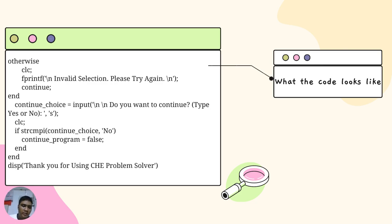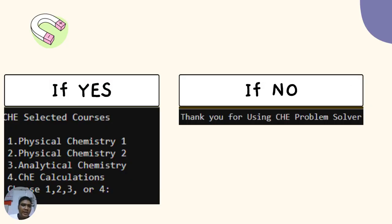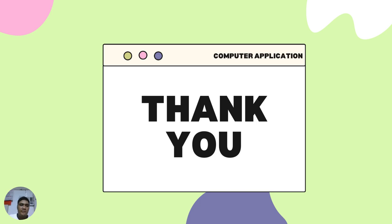Finally, this part of the code is responsible for looping the program. Whenever we solve one problem, the program will ask if you want to continue or not. If we type yes, it will automatically redirect you to select CHE courses. If you select no, it will greet you with: Thank you for using CHE Problem Solver. And that's it for the presentation of my code. Thank you.